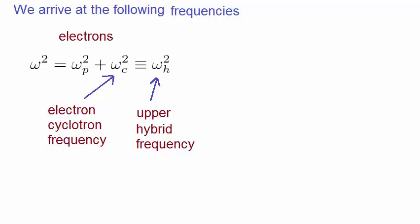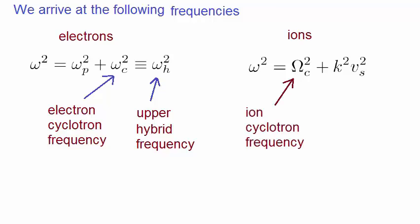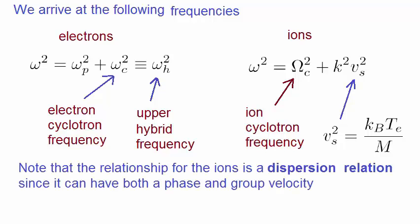Just as the plasma frequency was associated with an oscillation without wave travel, this is doing the same thing with a slightly more complicated motion of its electrons. The ions have the following expression for the angular frequency, where capital Ω is the ion cyclotron frequency, and Ω is given by this expression which depends on the electron temperature. But what you'll notice about this expression is it contains the wave number k, which means that you can obtain a phase and a group velocity. This is a travelling wave, and therefore this relationship is a dispersion relation.